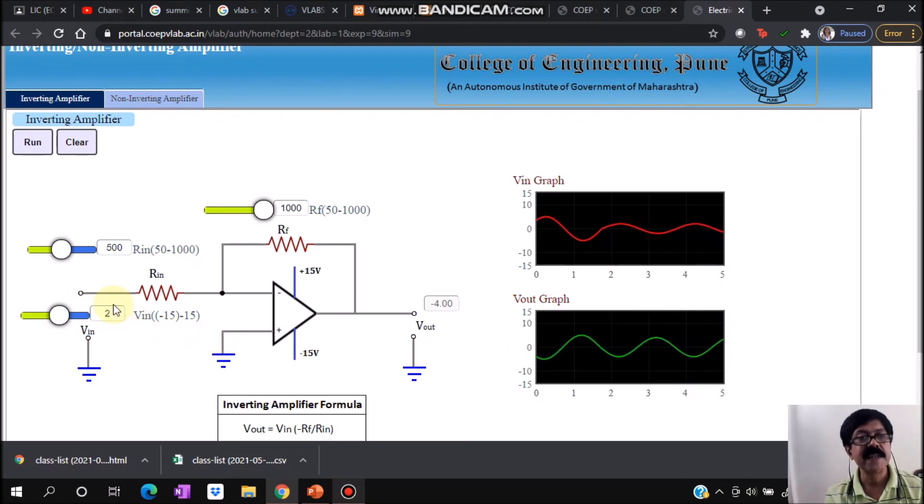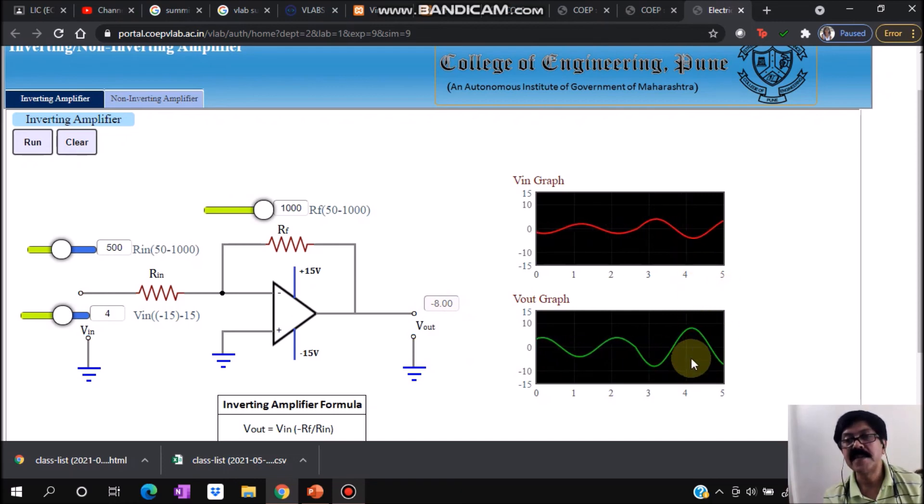Let's say I am changing the input now again to 4 volt. Accordingly, the output should be -8 volt. See the change here. The input voltage now will be increased. From this point we can see like this, and also you can see the 180 degree phase shift between input and output, which shows that it is acting as an inverting amplifier.